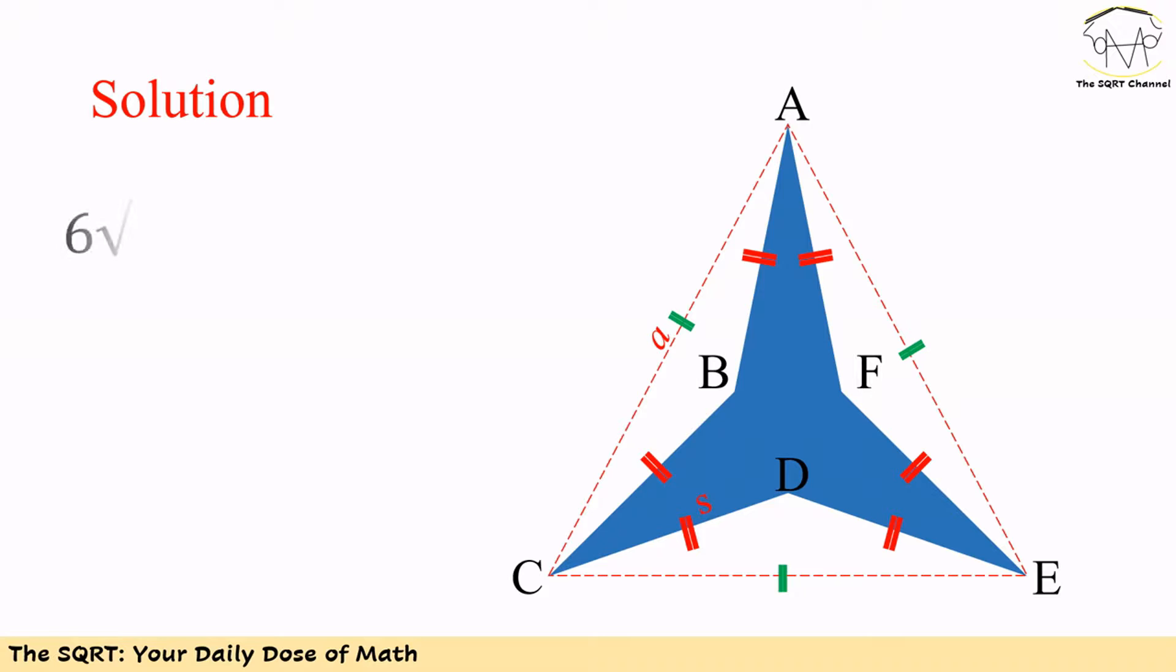We connect A to C, C to E, and A to E. And now we have triangle ACE where AC is equal to CE is equal to AE.